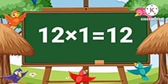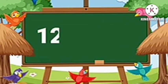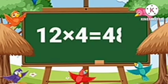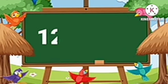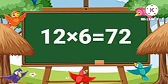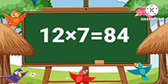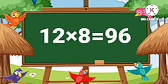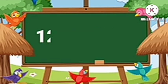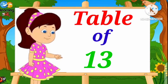Table of Twelve. Twelve-One's are Twelve. Twelve-Two's are Twenty-Four. Twelve-Three's are Thirty-Six. Twelve-Four's are Forty-Eight. Twelve-Five's are Sixty. Twelve-Six's are Seventy-Two. Twelve-Seven's are Eighty-Four. Twelve-Eight's are Ninety-Six. Twelve-Nine's are One Hundred and Eight. Twelve-Ten's are One Hundred and Twenty.